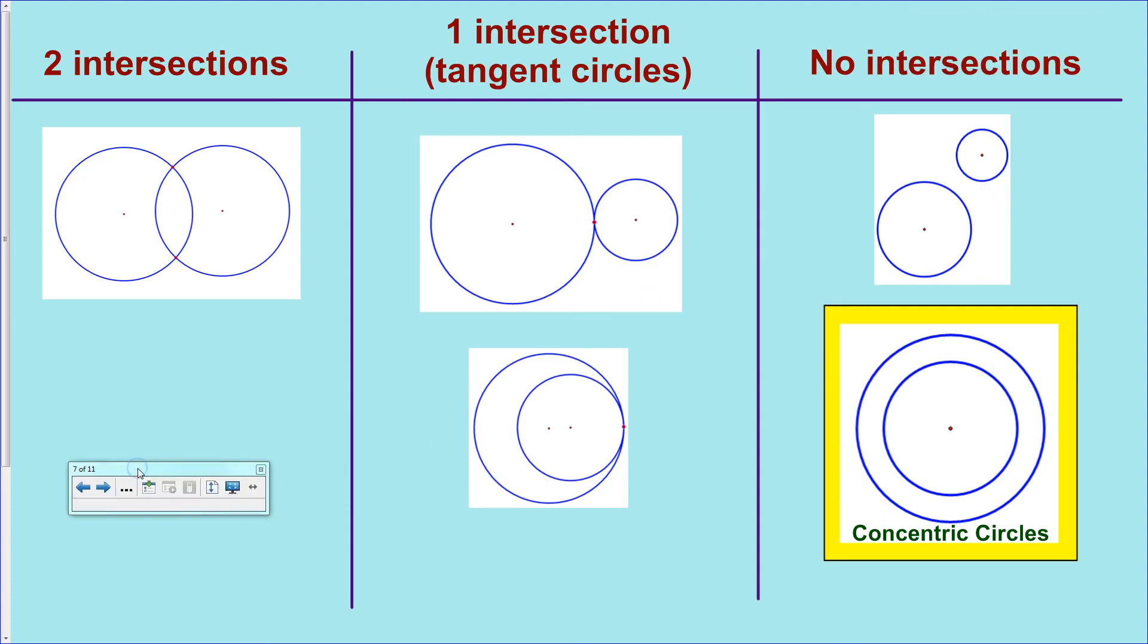Next set of vocab, not so much vocab, but definitely things to be aware of. Take two circles, move them about. How many times can they intersect? In how many different ways can they intersect? What is the connectivity of any two circles that you can draw in the plane? Well, you can have two intersections. It doesn't matter how big either circle is, but you can have a situation where they're overlapping each other in two points.